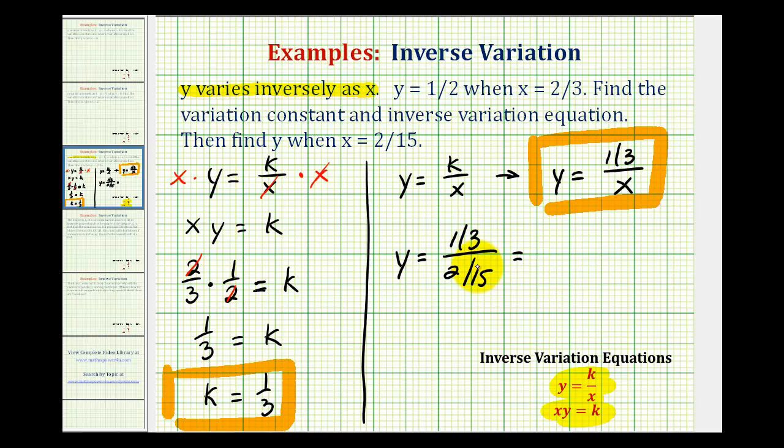So one-third divided by two-fifteenths is equivalent to one-third times the reciprocal of two-fifteenths, which would be fifteen-halves. Notice the three and the fifteen share a common factor of three. There's one-three in three and five-threes in fifteen. So this product is five-halves. So y equals five-halves when x equals two-fifteenths.